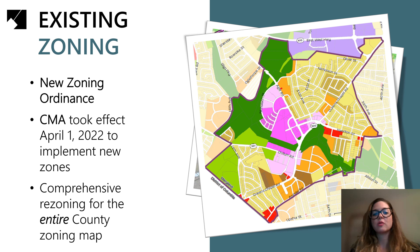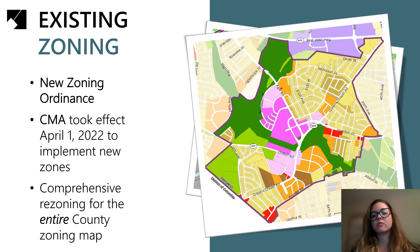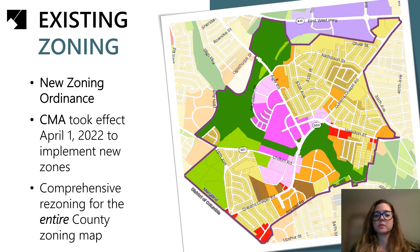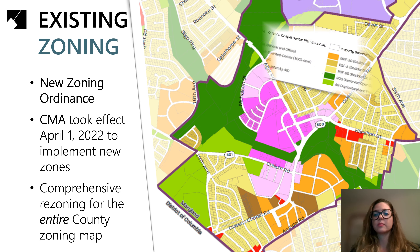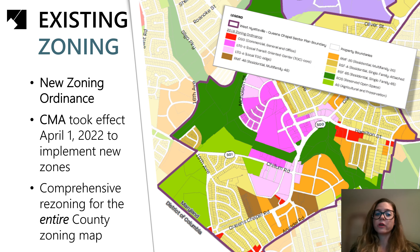Now let's zoom into the map showing the sector plan area for West Hyattsville, Queens Chapel, with its current zoning. Examples of common zoning categories include residential, commercial, industrial, agricultural, or a mix of uses. Our zoning gets more specific than that — you can see examples like Local Transit Oriented Core in hot pink, RSF 65 or Residential Single Family 65 in yellow, and ROS in dark green for reserved open space.